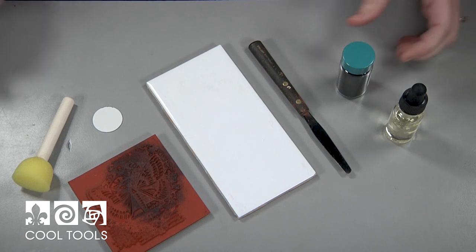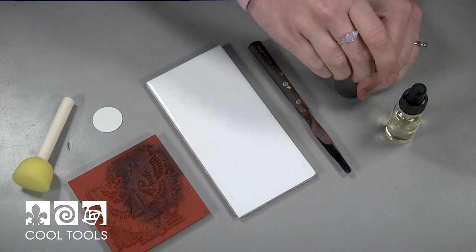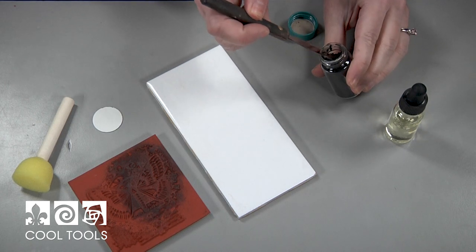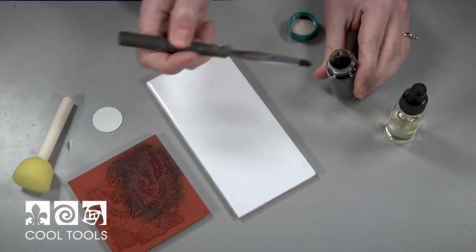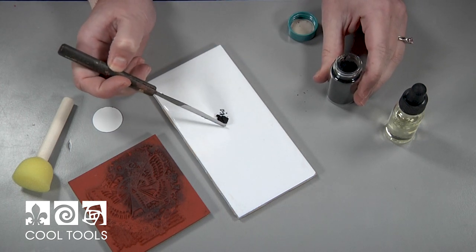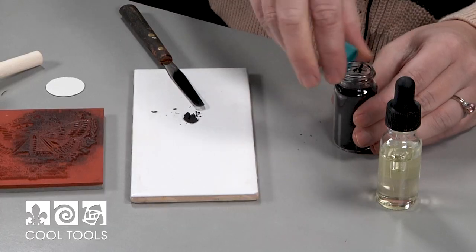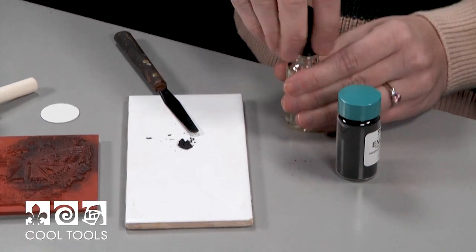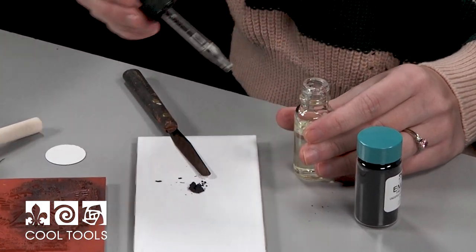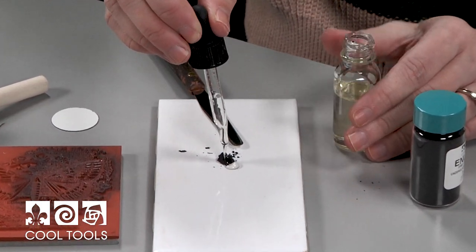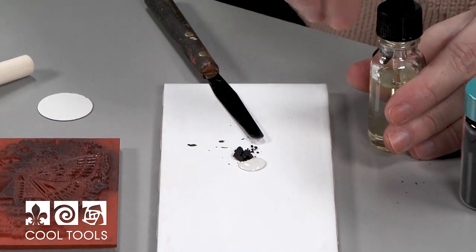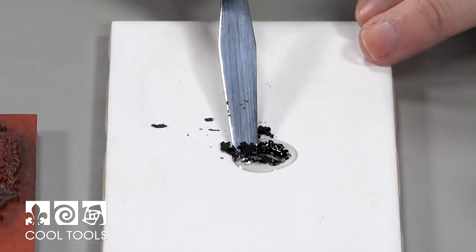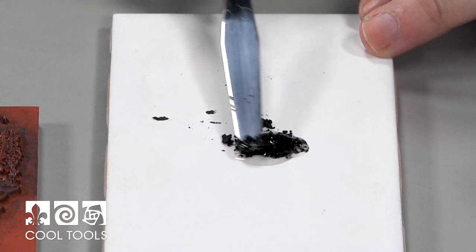Now that your surface has been prepared, you're ready to mix up your fine line black. I like to work on a tile for things like this. I'm going to scoop some out and then add some squeegee oil. There's no super exact or scientific method to this, you just want the fine line black to be opaque. So if it's transparent looking, then you need to add some more fine line black powder.